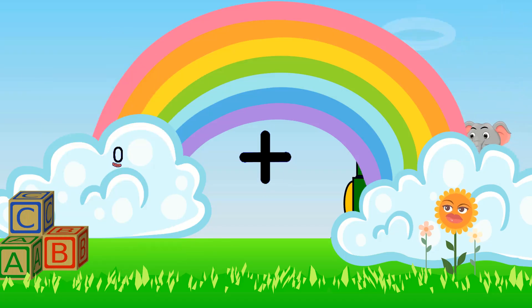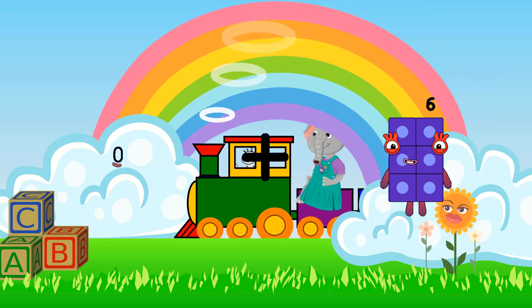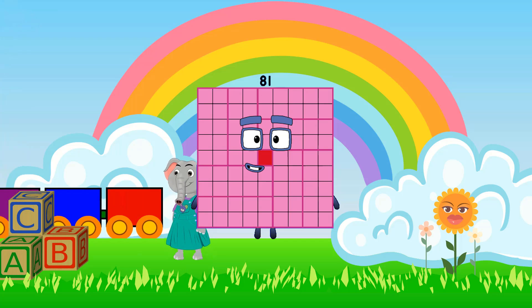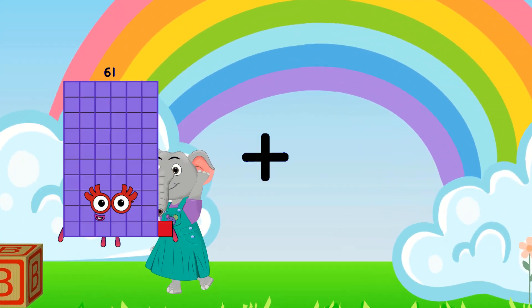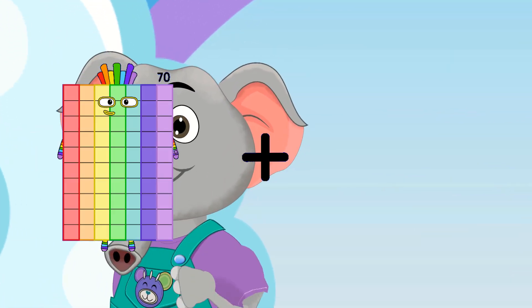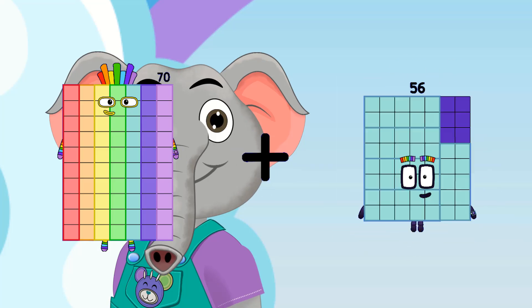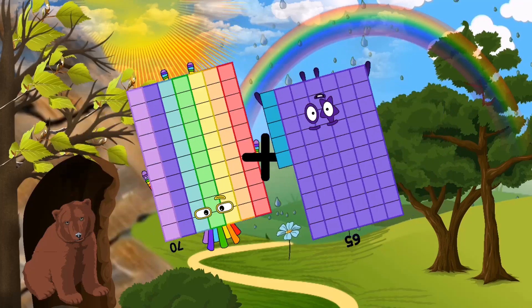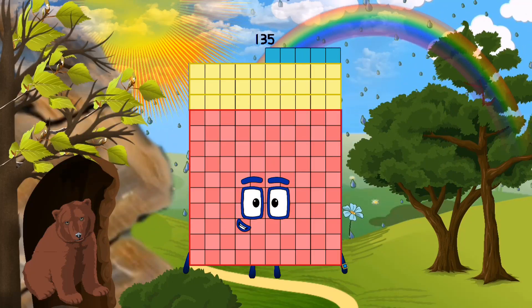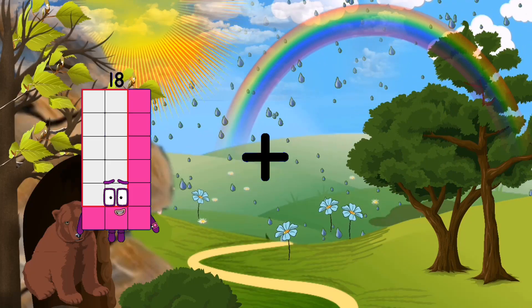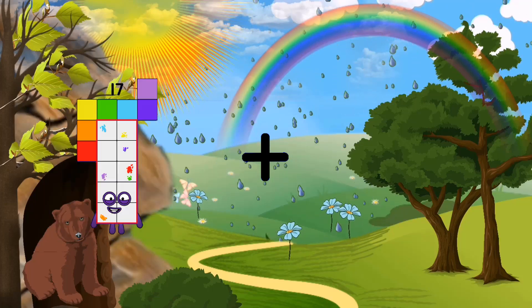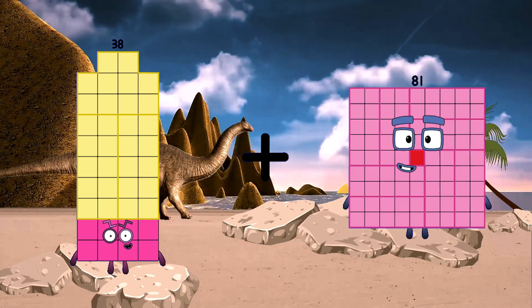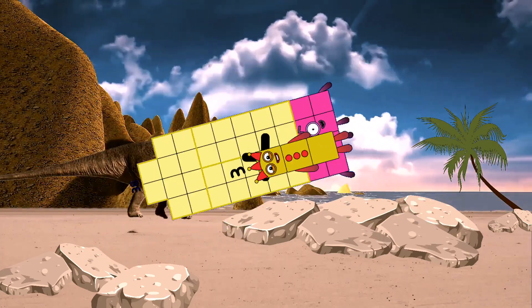Zero plus 81 equals 81. 70 plus 65 equals 135. 38 plus 3 equals 41.